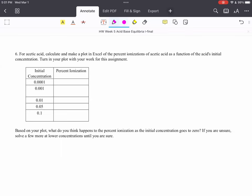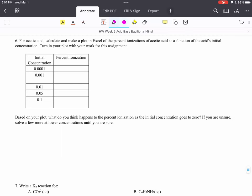Okay, this video is going to be about problem number six. It says, for acetic acid, calculate and make a plot in Excel of the percent ionizations of acetic acid as a function of the acid's initial concentration and turn in your plot.